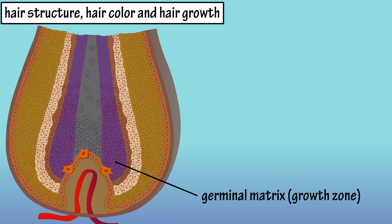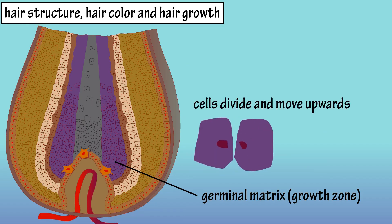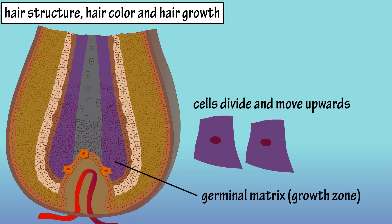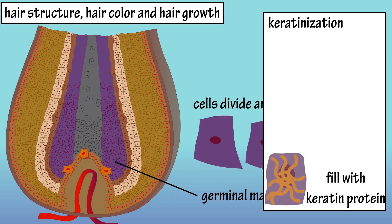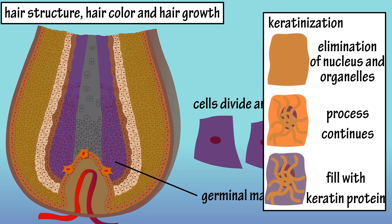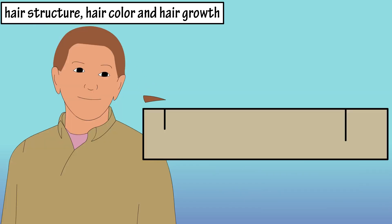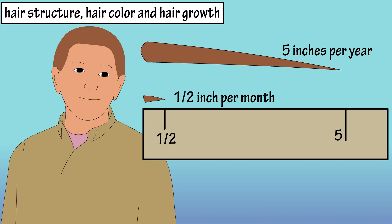Hair is formed by cells in the germinal matrix, which undergo mitosis, or cell division, and move upwards in the follicle and become keratinized. Keratinized cells are cells that were once alive, but filled with the keratin protein as they matured, causing them to lose their organelles and die. Hair in the scalp typically grows about a half inch per month, or five inches per year, with body hair growing more slowly.